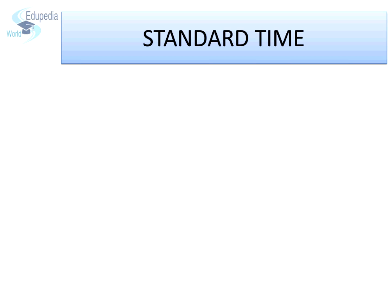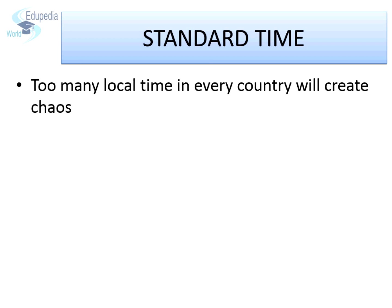Standard time. As mentioned in the previous example, different places in the same country are located on different lines of longitude and therefore will have different local times. This will create a lot of confusion regarding time in the country. In countries which have a great east-west extent, the variation in local time is more. Even in India, the difference is almost one and a half hours.